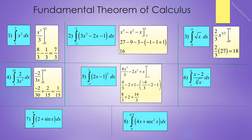Number 5 reads the integral from negative 1 to 1 of 2x minus 1 quantity squared dx. We could do this with u substitution but we will leave that till later. We expand the expression getting 4x squared minus 4x plus 1, and when we integrate we get 4x to the 3rd over 3 minus 2x squared plus x evaluated from negative 1 to 1. Doing the arithmetic we get 4 thirds minus 2 plus 1 minus the quantity negative 4 thirds minus 2 minus 1, giving 8 thirds plus 2. Final answer is 14 thirds.